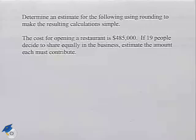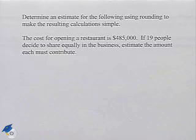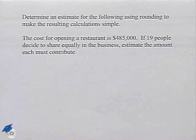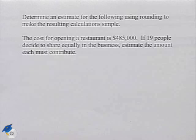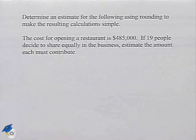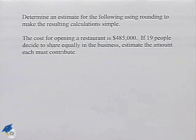Here's another problem dealing with estimation. Determine an estimate for the following using rounding to make the resulting calculation simple. The cost for opening a restaurant is $485,000. If 19 people decide to share equally in the business, estimate the amount each must contribute.